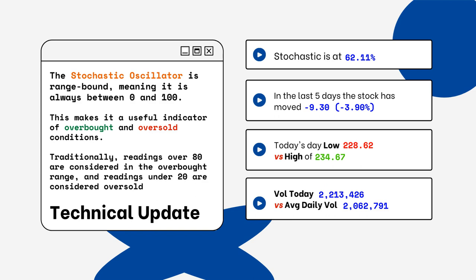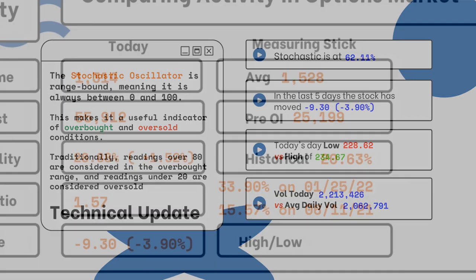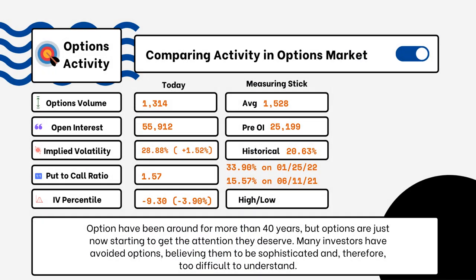We've also provided today's volume of shares traded and also the average daily volume. You want to see how much volume is being traded and if it is above or below the average daily volume level. This tells you how relevant the move is from the stock today.